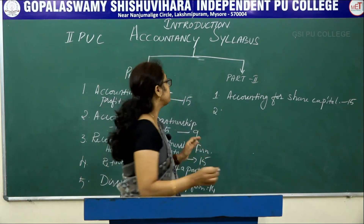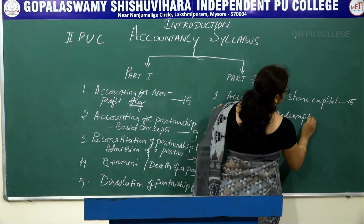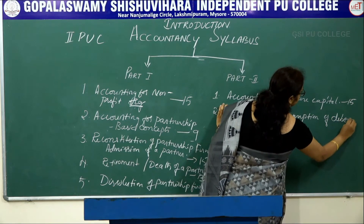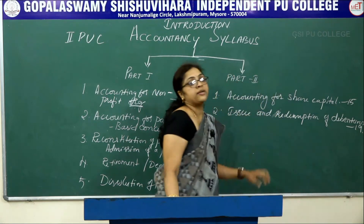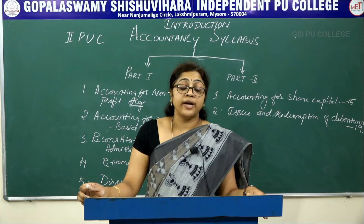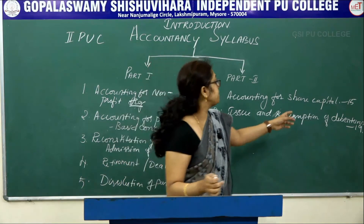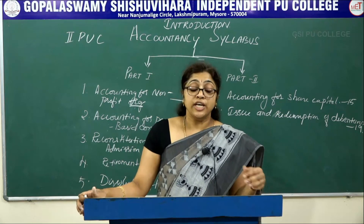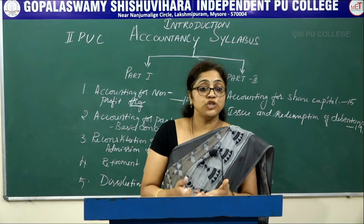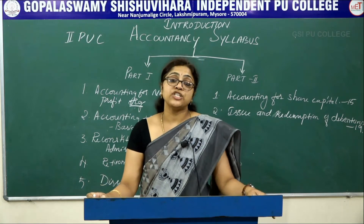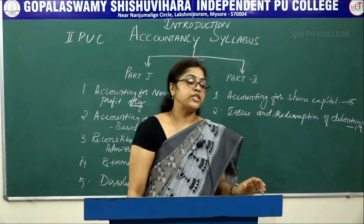The second chapter in Part 2 is Issue and Redemption of Debentures. Total marks allotted to this chapter is 19. A debenture is an acknowledgement of debt issued by the company. In this chapter you learn about the meaning of debentures, differences between shares and debentures, types of debentures, issue of debentures at par, premium, and discount, terms of issue, debentures issued for consideration other than cash, and redemption of debentures.